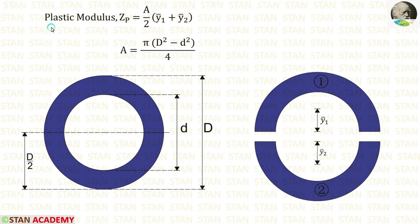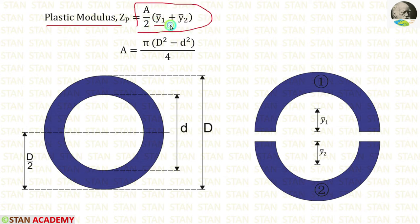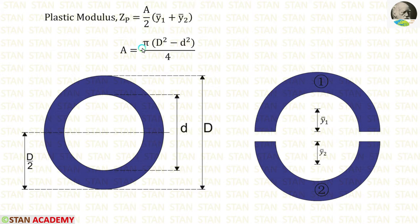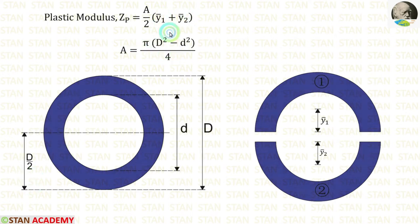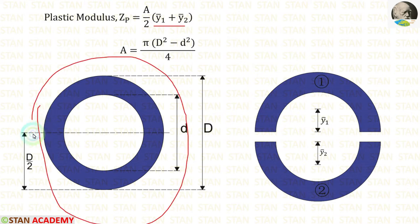Now let us calculate the plastic modulus Zp. The formula is A by 2 into y1 bar plus y2 bar. The area formula for a hollow circle is pi into caps D square minus small d square, by 4. To calculate y1 bar and y2 bar, we have to split the circle into two parts about the equal area axis.